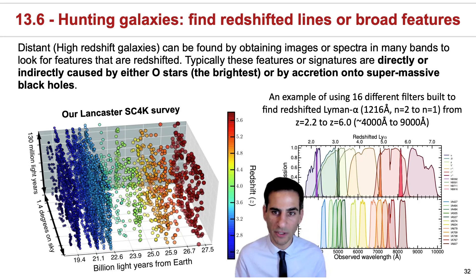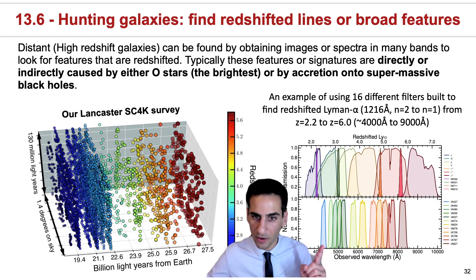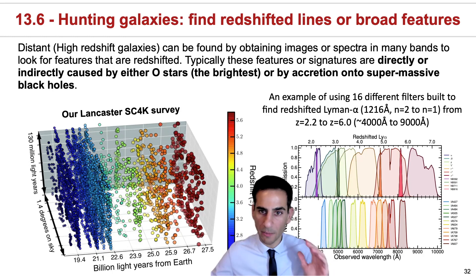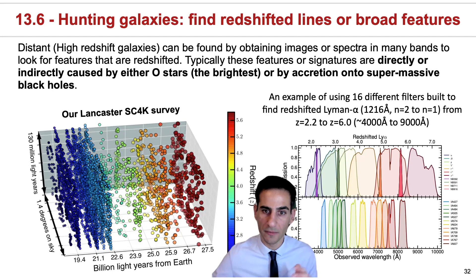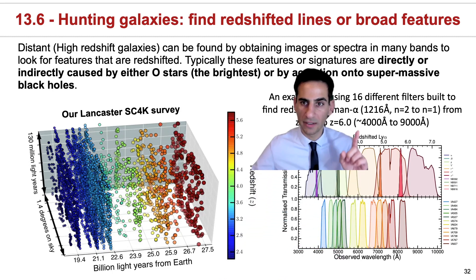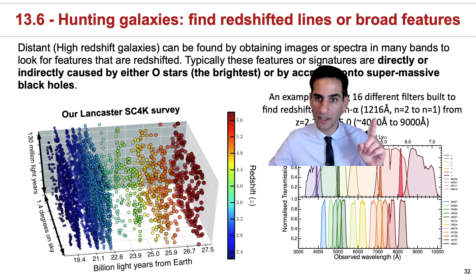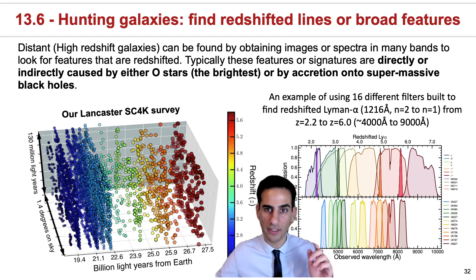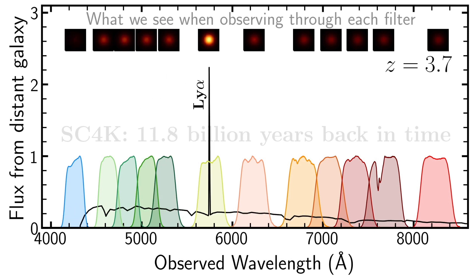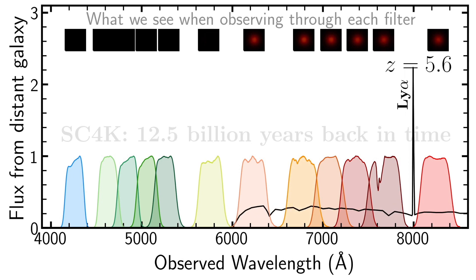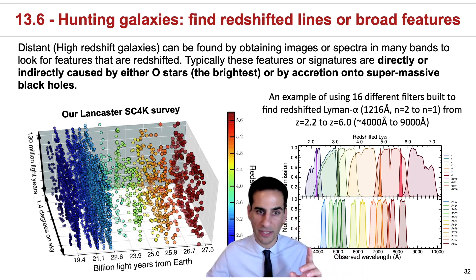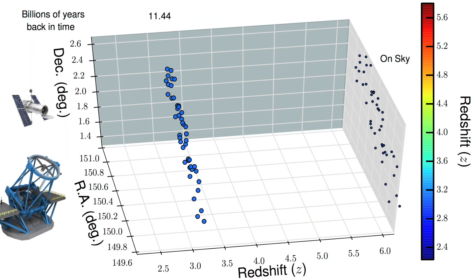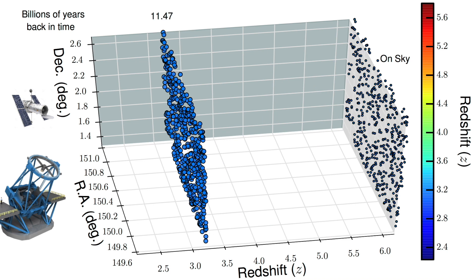Here at Lancaster, one of the techniques that we use is to actually build filters that are only sensitive to light at specific wavelengths, and then put them on top of telescopes like the INT or the Subaru telescope to actually map the universe and try to look for redshifted Lyman-Alpha emission. If you recall section five, when we look at the hydrogen atom, Lyman-Alpha has a rest frame wavelength of 1216 Angstroms, so if it redshifts to something like 4000 Angstroms, we're looking at a redshift of about 2.2. If it redshifts all the way to almost 9000, we're looking at redshifts 6 and 7. By surveying the universe with all these filters and finding things with Lyman-Alpha in them, we can actually produce 3D maps like this — such as our Lancaster 'Slicing COSMOS in 4K' with 4000 Lyman-Alpha emitters.